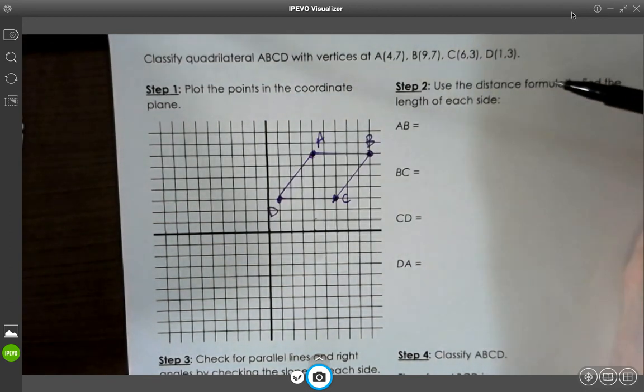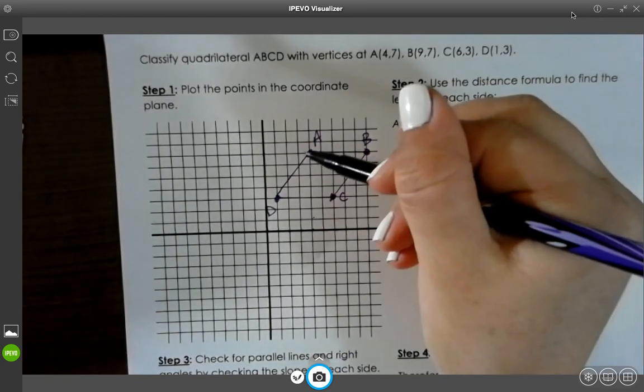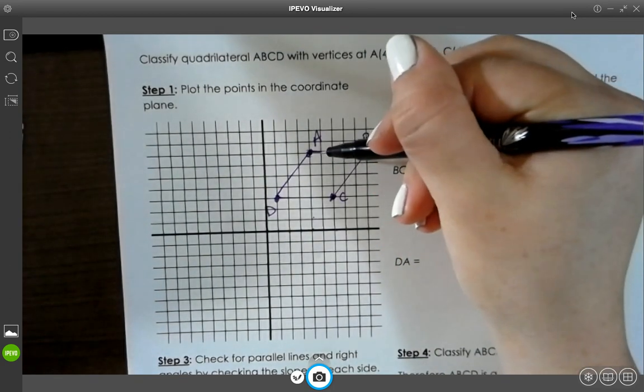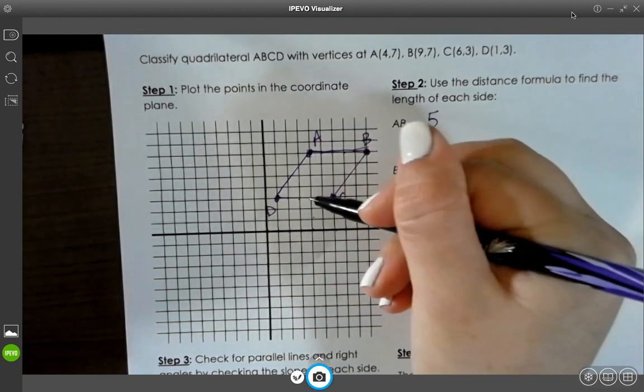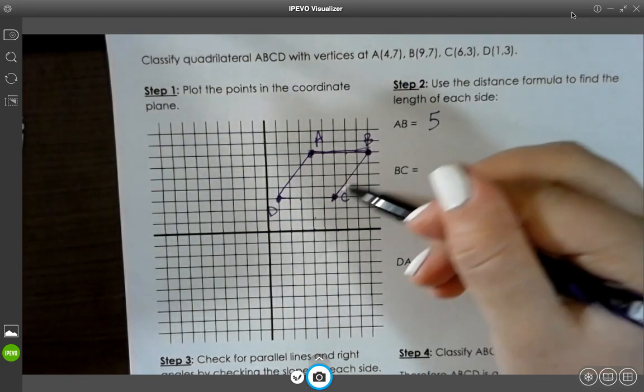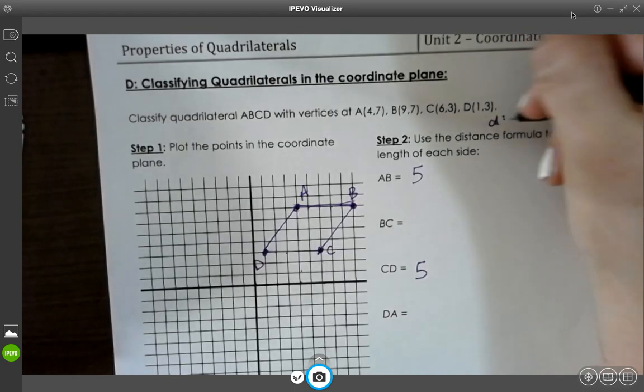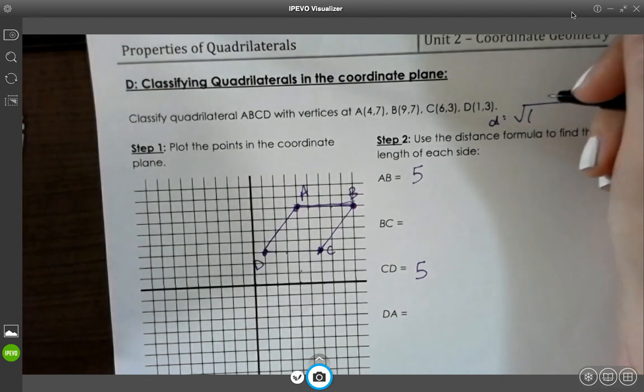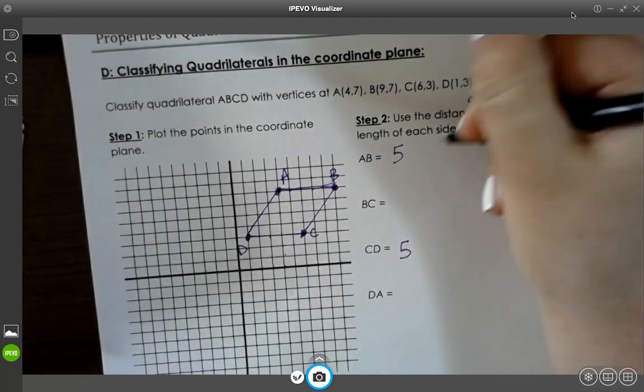I use the distance formula to find the length of each side. So for straight lines, you don't need distance formula. You can count. 1, 2, 3, 4, 5. 1, 2, 3, 4, 5. For diagonal lines, you need to use the distance formula. Remember, the distance formula is square root of x2 minus x1 squared.